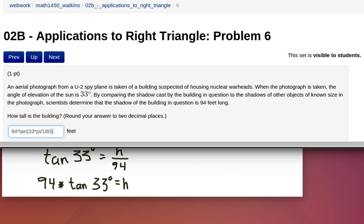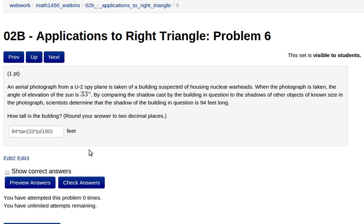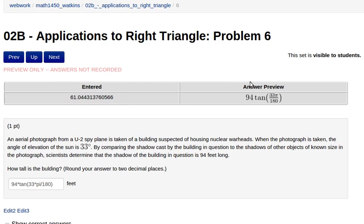And of course we can check that answer. Now, one of the things that they said was to round this answer to two decimal places. Let me just preview that answer. You see, WebWork will do that calculation for me. So I really want 61.04 because I want it rounded off to two decimal places.